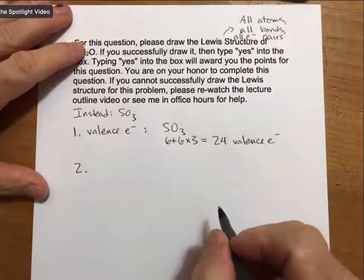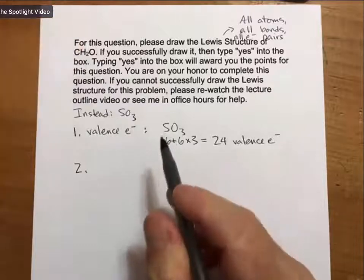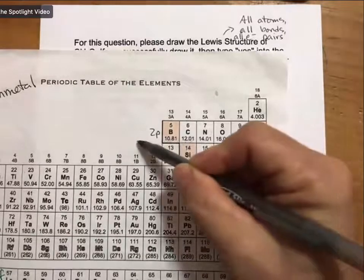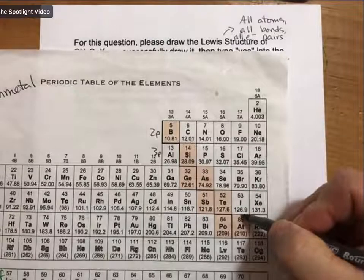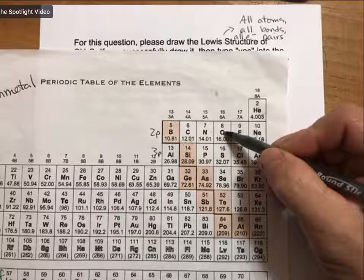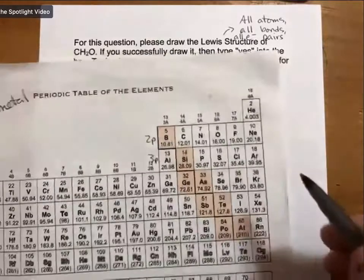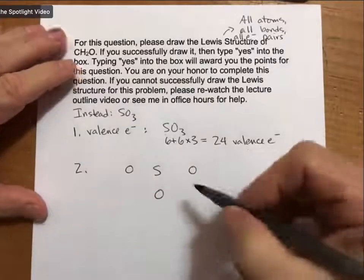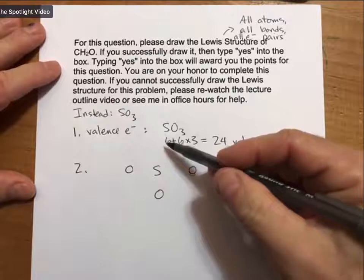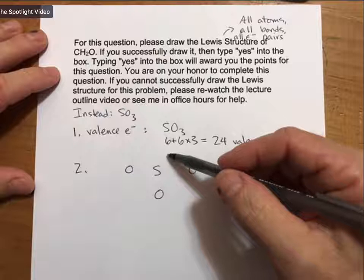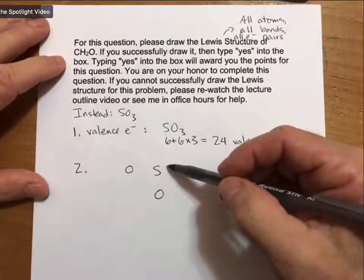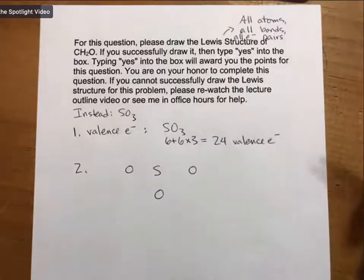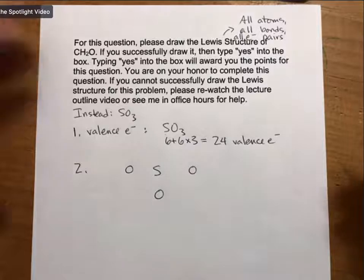Step two is to put the least electronegative atom in the center. If you'll remember your trend in electronegativity from the lecture outlines, electronegativity decreases as you go to the left, and electronegativity decreases as you go down. So electronegativity decreases from oxygen to sulfur. Sulfur will be our central atom. And then we will surround it by oxygens. And if there's more than one central atom, I will tell you. Or if there's any question as to what the central atom is, I will tell you. And if I make a mistake, please ask. I think the only thing where I don't tell you the central atom is when there's carbons and hydrogens. And that's because hydrogen cannot be a central atom, and carbon usually is.